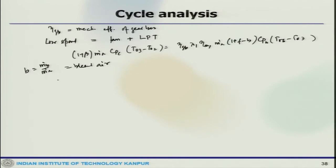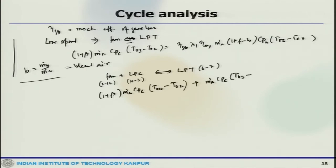In the second case where the low pressure turbine drives the fan and low pressure compressor (LPC), the energy balance can be written: (1+beta)*(M_dot_A)*(Cp_c)*(T010-T02) + M_dot_A*Cp_c*(T03-T010) = eta_gearbox * lambda_1 * eta_M1 * (1+F-B) * Cp_H * (T06-T07).